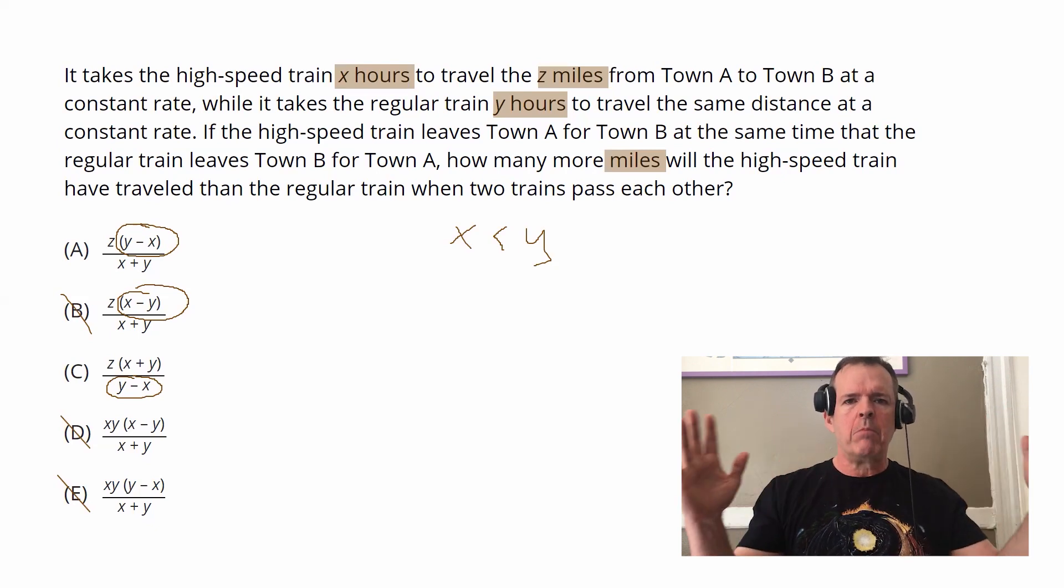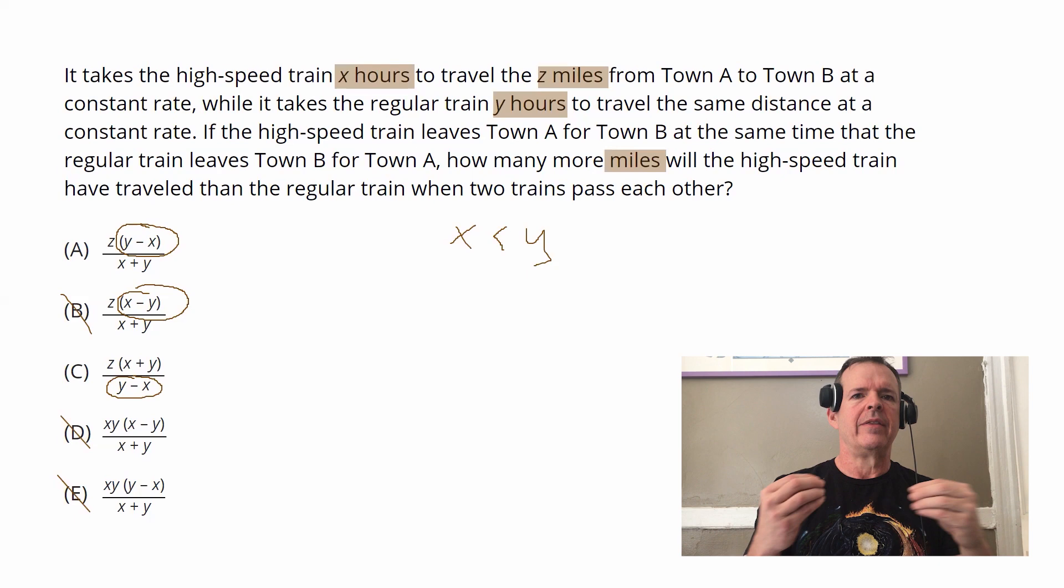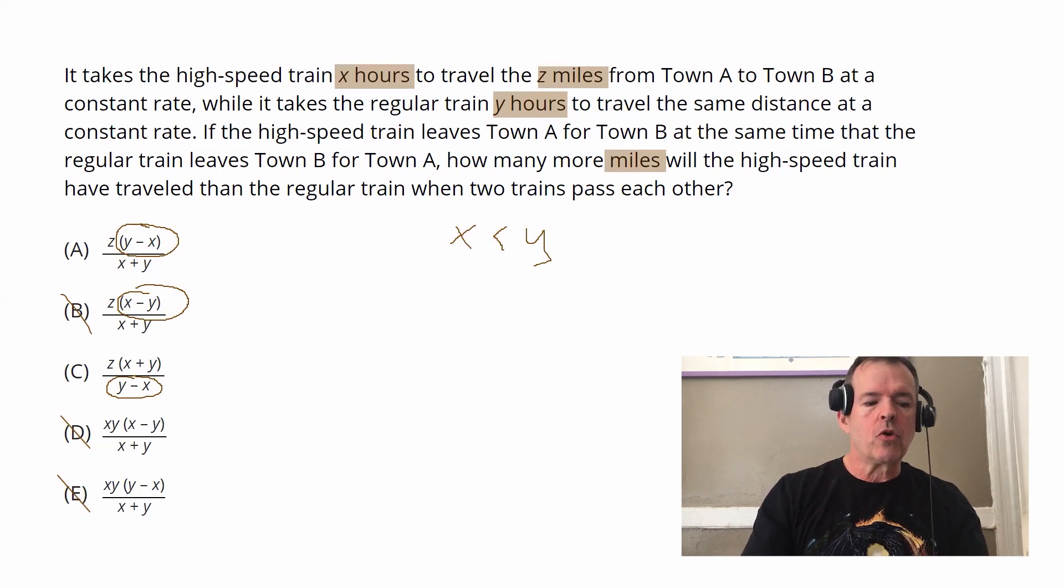Well, if it's that much difference, if it's 1 in 10, that means the high speed train is that much faster. So the greater, the larger the value of Y minus X, that's going to tell us that this number, the miles that the high speed train travels, will go up. So that needs to be in the numerator.